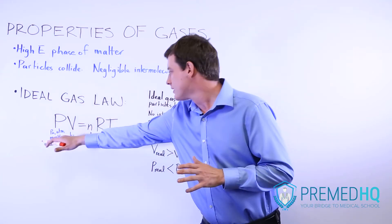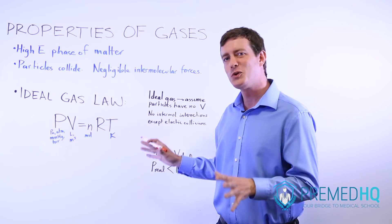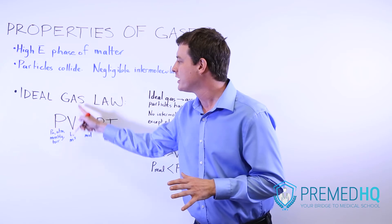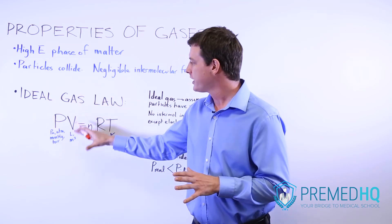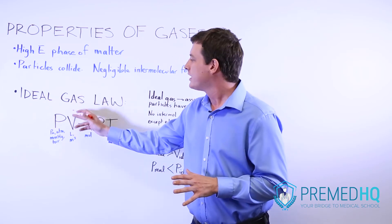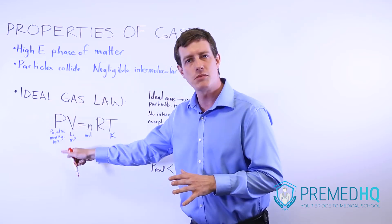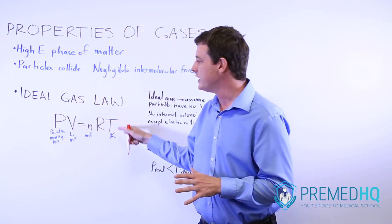The interesting thing is that this formula still tends to hold up very well. And if PV equals nRT, and V is a little bit greater than we would calculate using this, we can assume then that if V is greater, P must be a little bit smaller if PV is going to equal nRT.